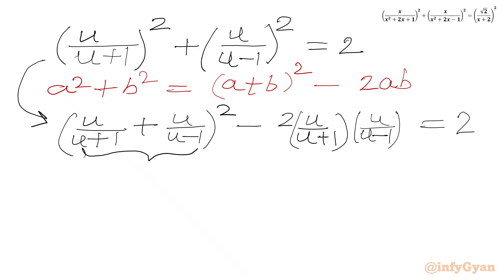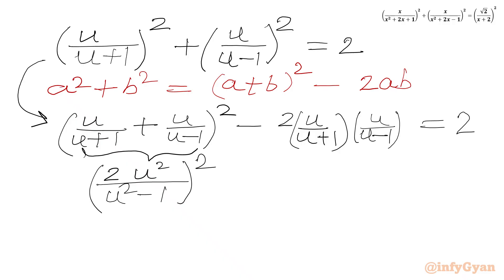Now we simplify the bracket. We get u squared minus u plus u plus u in the numerator, so I can write 2u² over (u+1)(u-1). Using the difference of two squares identity we write u²−1 in the denominator, so it becomes 2u²/(u²−1), whole squared, minus 2u²/(u²−1).